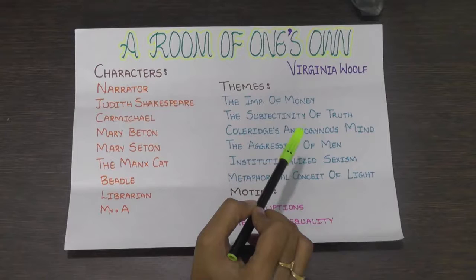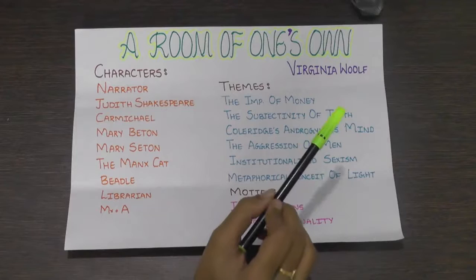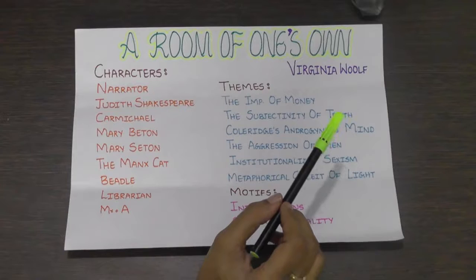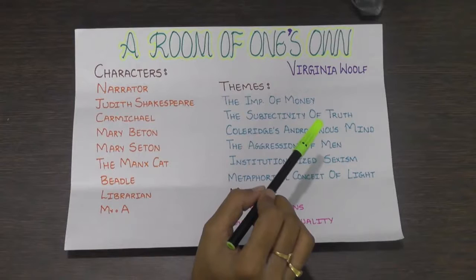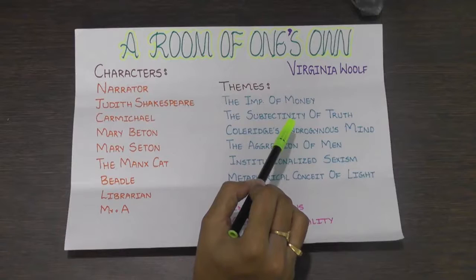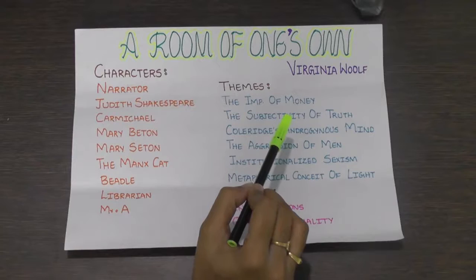Woolf adapts Romantic poet Samuel Taylor Coleridge's idea that the androgynous mind is a pure vessel for thought that inspires the most objective and creative relationship with reality. She reasons that an androgynous mind like Shakespeare's is unconcerned with its own petty grievances. It rises beyond and filters out its personality as the universe shines directly upon the mind.